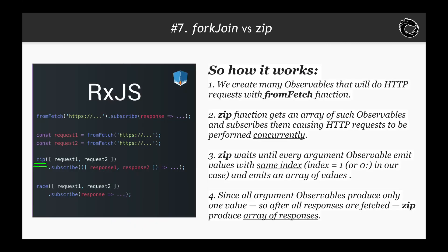How does it work? We create many observables that will do HTTP requests with the fromFetch function. The zip function gets an array of such observables and subscribes to them, causing HTTP requests to be performed concurrently. Zip waits until every argument observable emits values with the same index and emits an array of values. Since all argument observables produce only one value, after all responses are fetched, zip produces an array of responses. You may think everything is OK — and actually it is, but only in this particular case.